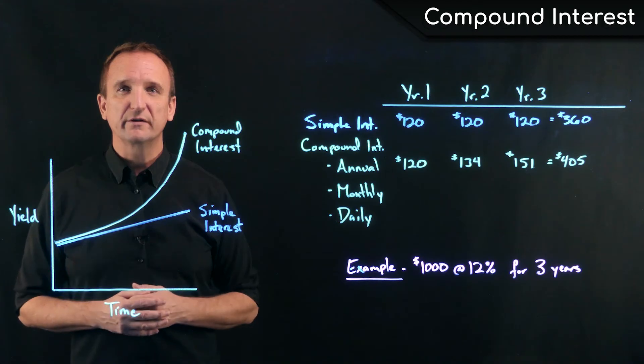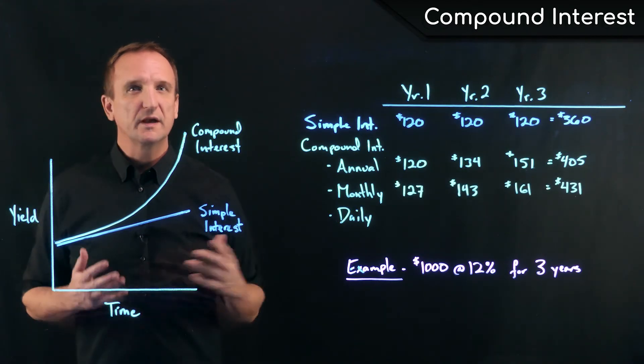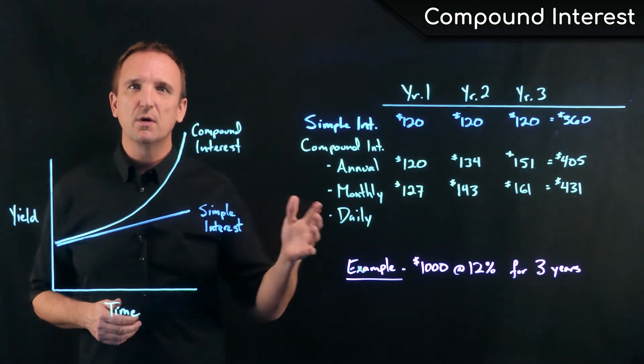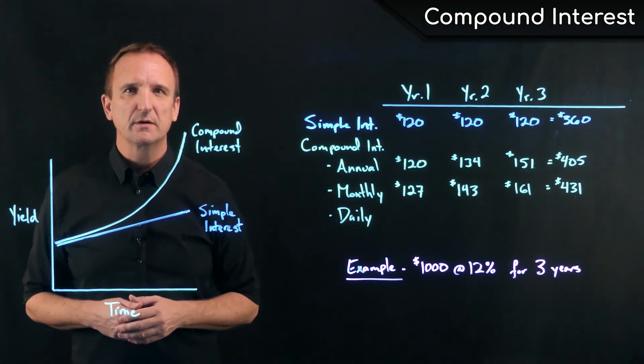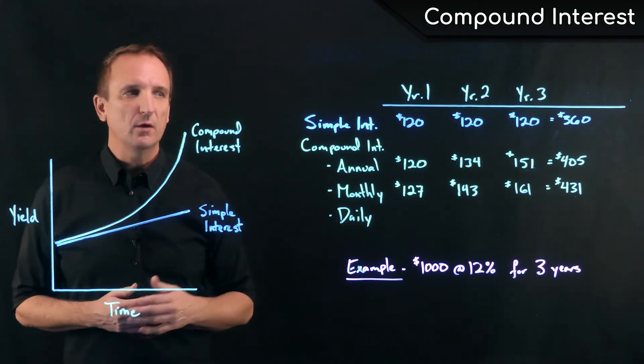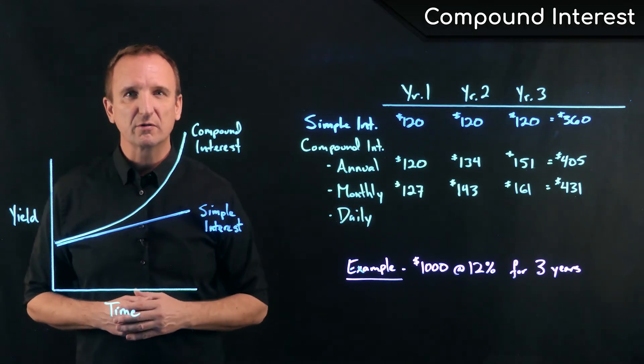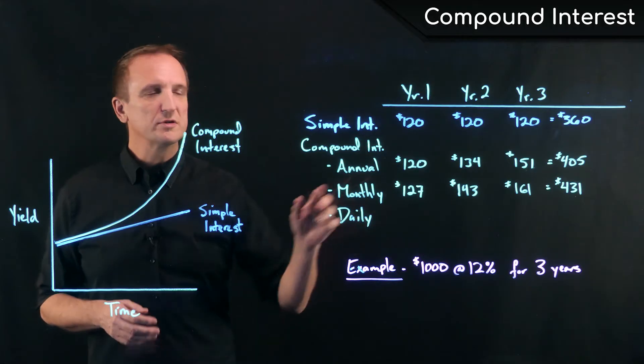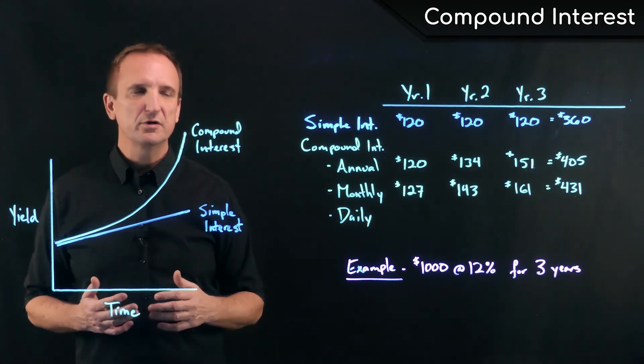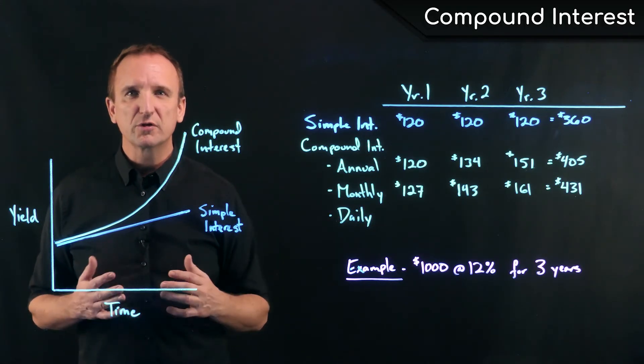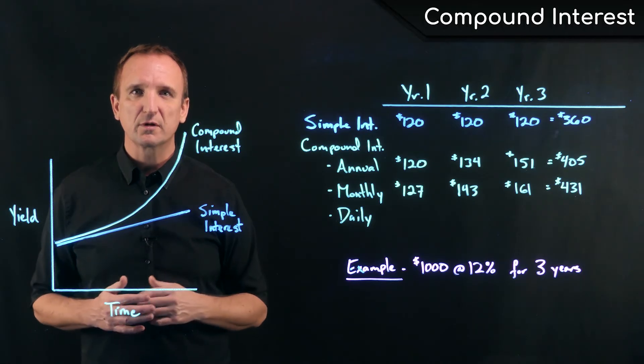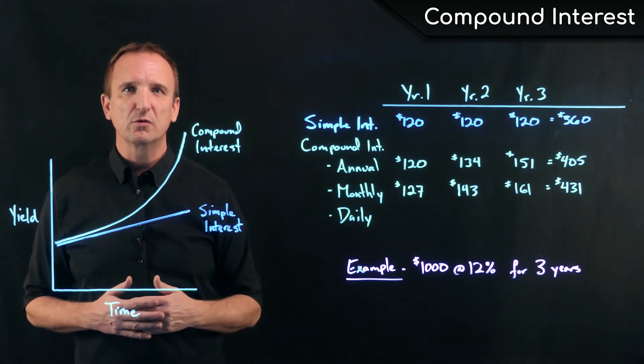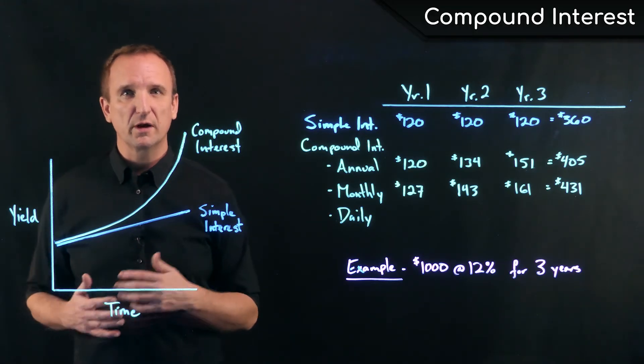Let me show the effect of monthly compounding. In the case of monthly compounding, we would earn 1% interest each month throughout the life of the investment. The effect of that would be that we would earn $127 in the first year, $143 in the second year, and $161 in the third year for a total of $431 worth of interest earned. And that's because we're earning interest every month, so we're earning interest on our interest earlier and more often.